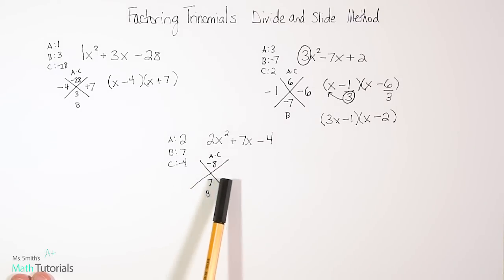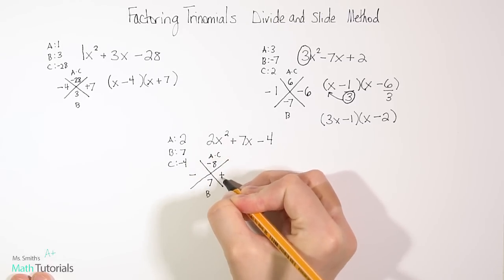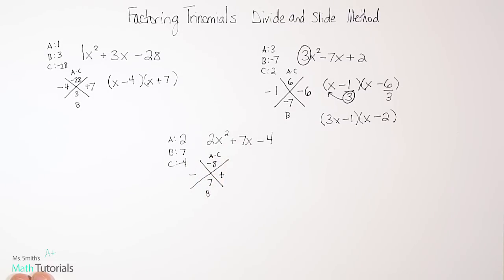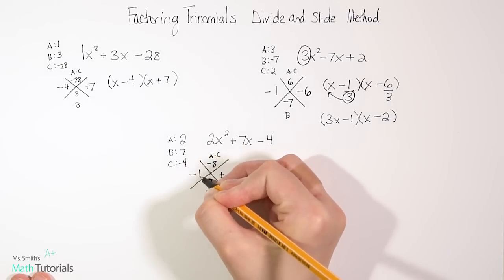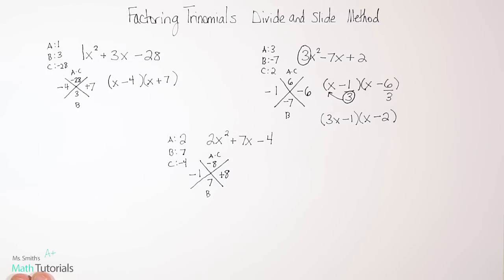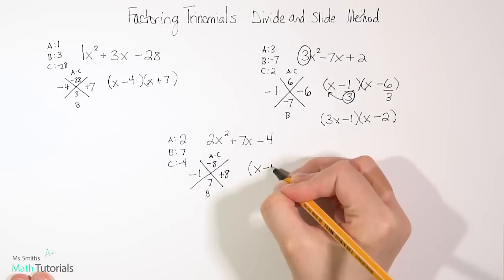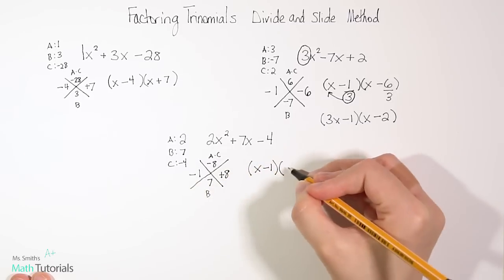So if I'm multiplying and getting a negative number, that means my sign has to be a negative and a positive. That's the only way to multiply and get a negative. Now in terms of my actual factors, the things that go into 8 are 1 and 8 and 2 and 4. Only one of those is going to work to give me 7. It's going to end up being a negative 1 plus 8. That would give me a positive 7. So let's write our almost answer. x minus 1 and x plus 8.